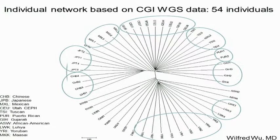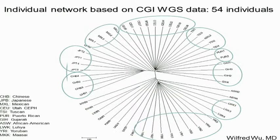Most of the samples that fall outside the main cluster and sort of in between the non-African and African groups are African Americans, reflecting their population history.